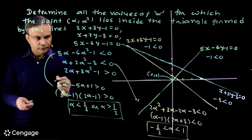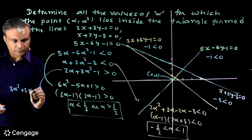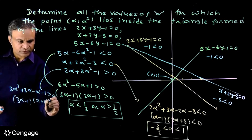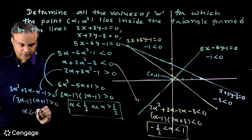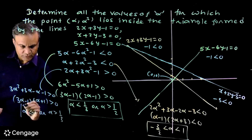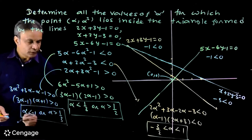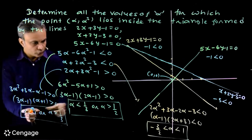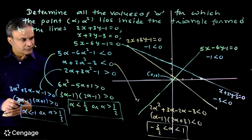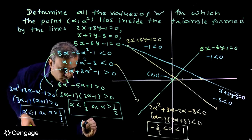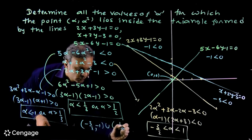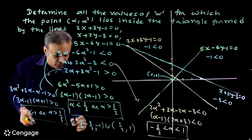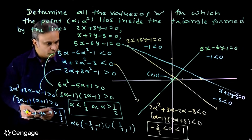Now we solve the third inequality: 3α² plus 2α minus 1 greater than 0, which factors as (3α minus 1)(α plus 1) greater than 0, giving α less than minus 1 or α greater than 1/3. This is the third set. We want all three conditions satisfied simultaneously, so we look for common values. The common values are: alpha belongs to (minus 3/2, minus 1) union (1/2, 1).